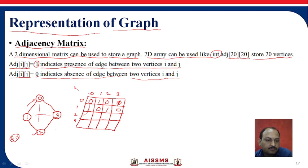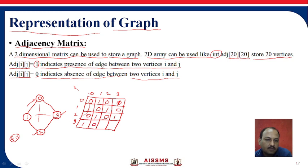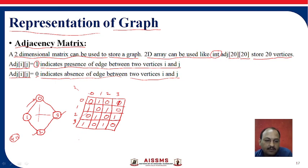Now row 2: 2 to 0 — no; 2 to 1 — yes; 2 to 2 — no self loop; 2 to 3 — yes. And row 3: 3 to 0 — yes, direct connection; 3 to 1 — no; 3 to 2 — yes; 3 to 3 — no. In this way, we can represent this particular graph in matrix format. This is called the undirected graph adjacency matrix representation.